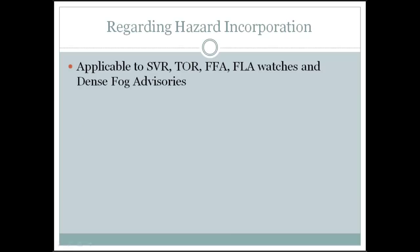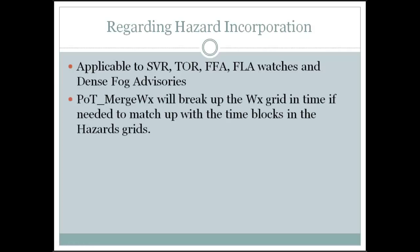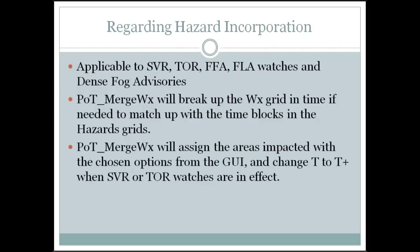The GUI includes hazard incorporation options for tornado watch, severe thunderstorm watch, and flash flood watch. If you have your hazard grid aligned with a thunderstorm watch over a specific time period, merge weather will break up that weather grid in time if needed and assign areas within the grid based on those hazards. If I just want 'damage and wind' assigned for the severe thunderstorm watch, I click that option and the weather grid will show T+ with damage and wind next to the thunderstorm over the specific watch area.